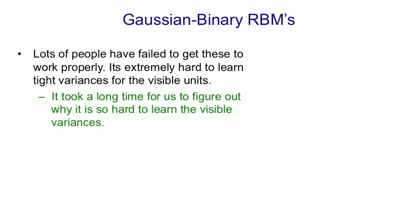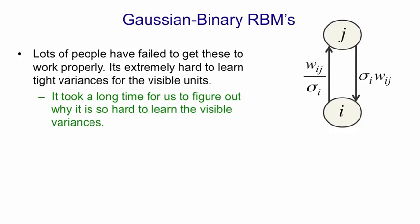This picture helps. If you consider the effect that visible unit i has on hidden unit j, when visible unit i has a small standard deviation sigma i, that has the effect of exaggerating the bottom-up weights. That's because we need to measure the activity of i in units of its standard deviation. So when the standard deviation is small, we need to multiply the weight by a lot. If you look at the top-down effect of j on i, that's multiplied by sigma i.